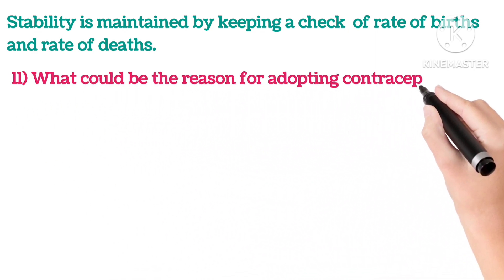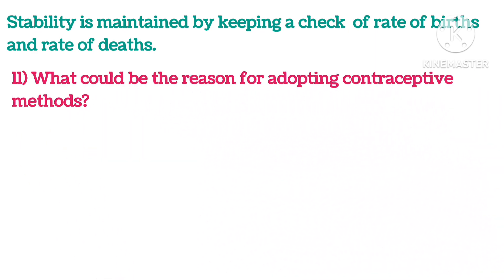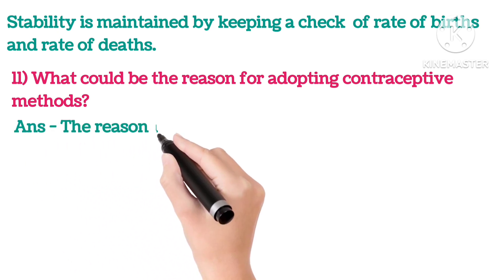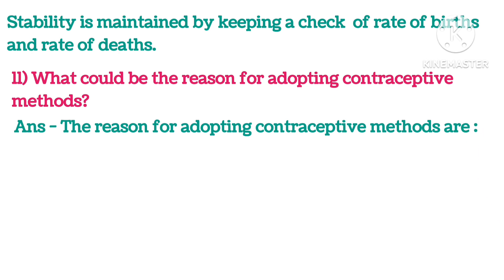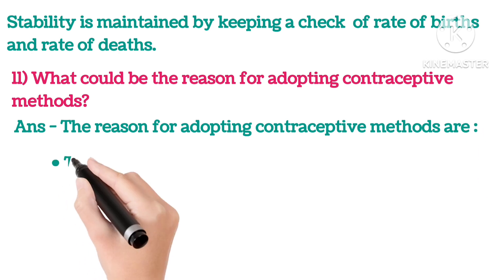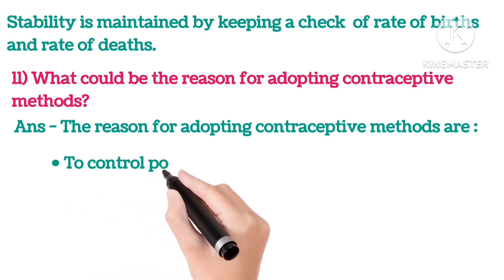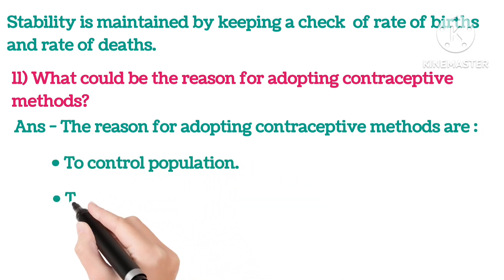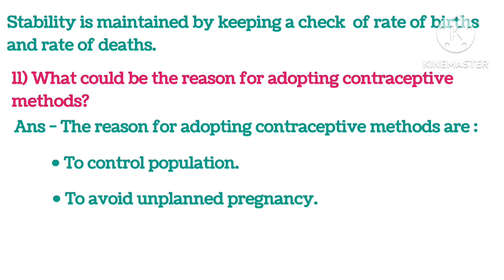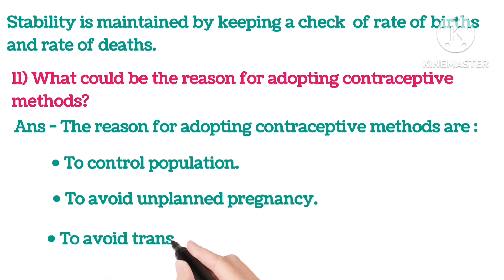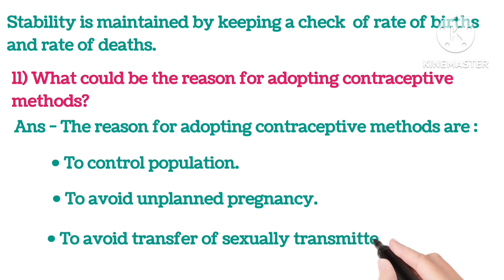Eleventh: What would be the reason for adopting contraceptive methods? The reasons for adopting contraceptive methods are: First, to control population. Second, to avoid unplanned pregnancy. Third, to avoid transfer of sexually transmitted diseases.